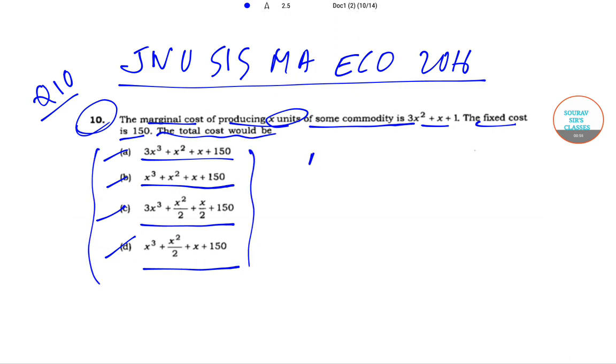Now we know that marginal cost is a function of x. Marginal cost is nothing but the differentiation of the cost function with respect to x, since x is the commodity. Normally we use Q, but here we are using x.